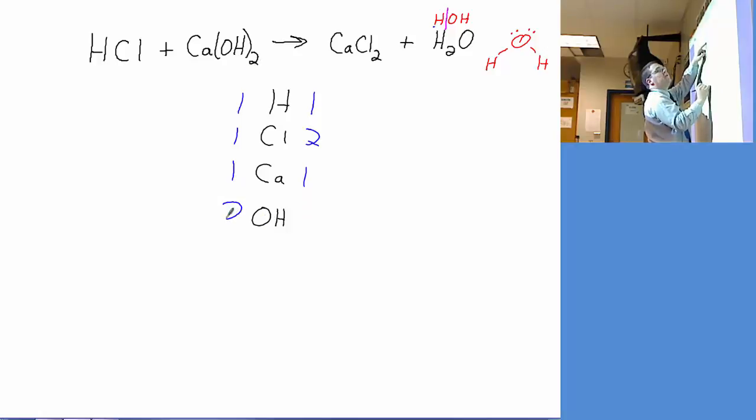Okay, so let's start with chlorine. If we've got one on the left and two on the right, that means we're going to need two HCls. That's going to update our hydrogens to two, our chlorines to two - balances those.